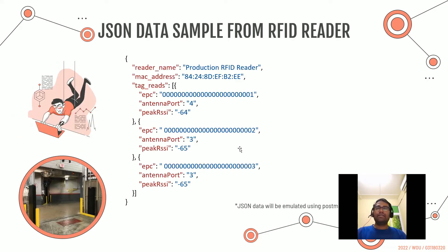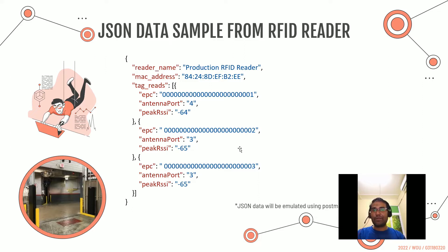This is how the JSON data sample from the RFID reader looks like. It contains the reader name, the MAC address, and also the tag reads. Within the tag reads, there is the Electronic Product Code — a unique identifier consisting of only digits — the antenna port number, and the peak RSSI values, which are the RF signal values used to filter whether tags are close or far away.